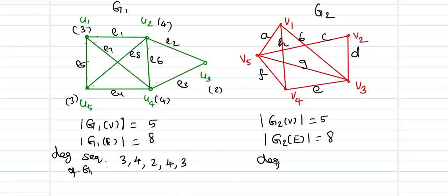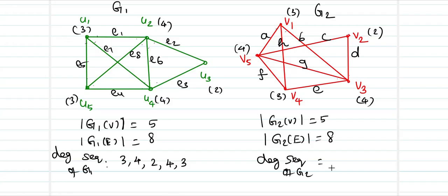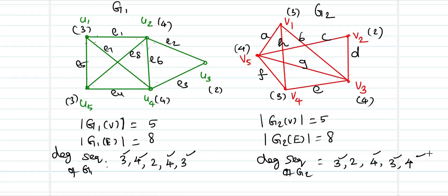Let's check the degree sequence of G2. V1 has degree 3, V2 has degree 2, one vertex has degree 4, another has degree 3, and another has degree 4. So the sequence is 3, 2, 4, 3, 4. There are 2 copies of 3 in G1 and 2 copies of 3 in G2; 2 copies of 4 in each; and 1 copy of 2 in each. The degree sequences match.